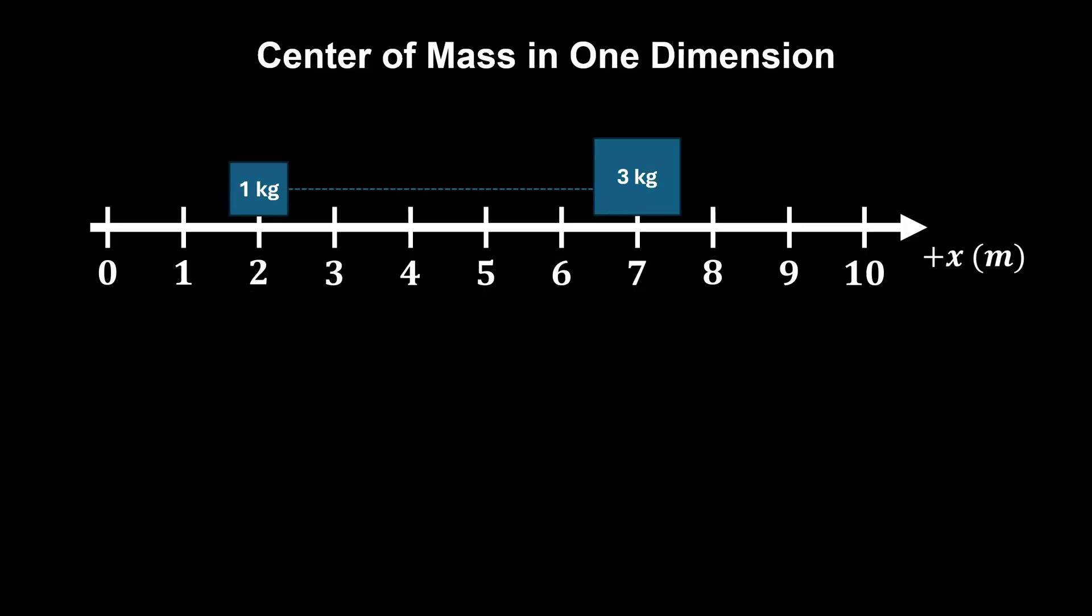Let's take a look at an example. Here we have a two-object system along the x-axis.